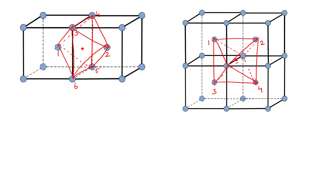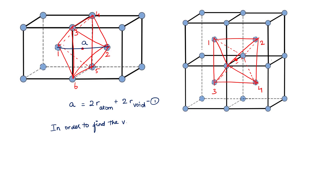Considering either case, we can find that the distance between the body-centered atoms is nothing but the lattice parameter A. From this we can write Equation 1: the lattice parameter A is equal to twice the radius of the atom plus twice the radius of the void. In order to find the value of the radius of the void, we need to represent lattice parameter A in terms of the radius of an atom.